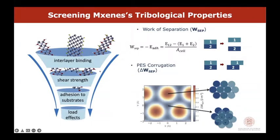The large tunability of the chemical composition and structure of MXenes makes them very appealing for high-throughput computational studies based on first-principles calculations. This high-throughput approach allows calculation of material properties for a large number of materials in parallel in an automated way, screening and identifying those most suitable for particular applications. Here we focus on tribological applications.